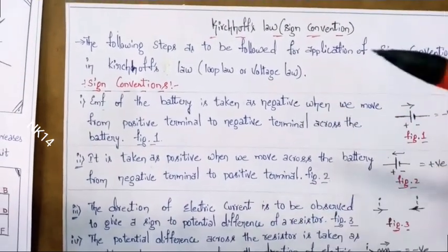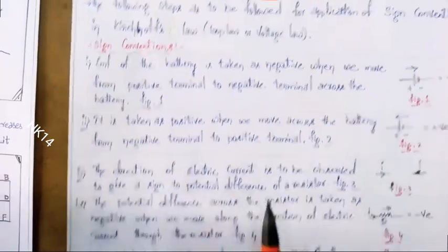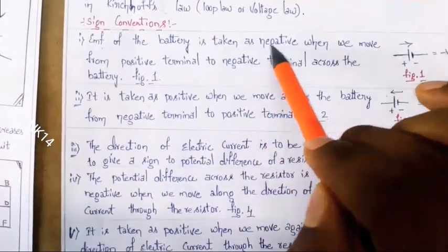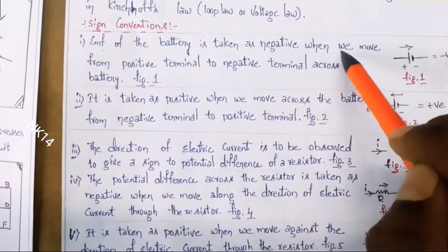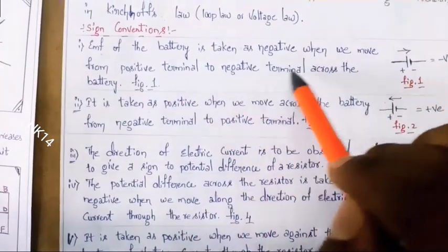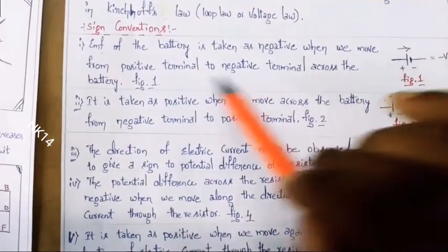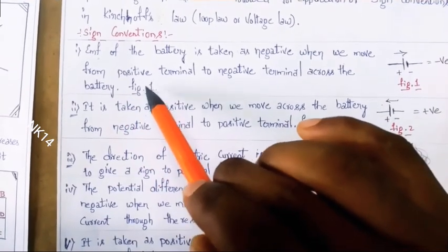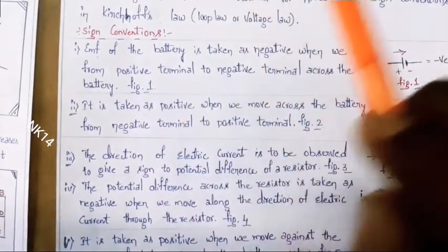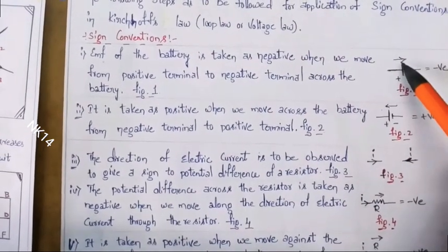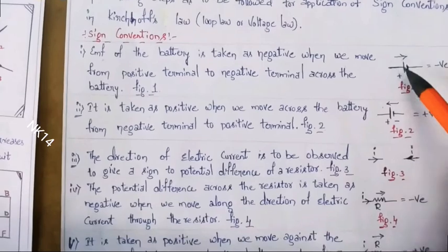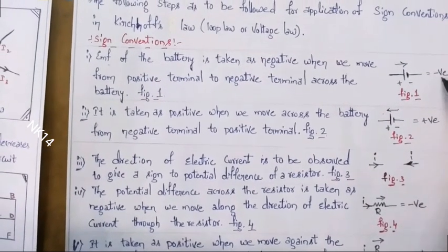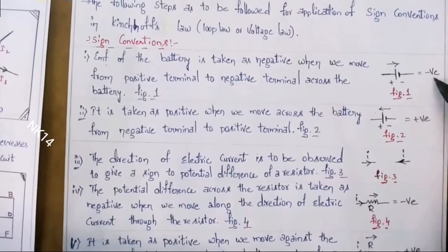The first point: EMF of the battery is taken as negative when we move from positive terminal to negative terminal across the battery. Figure 1 explains this neatly. If the EMF is transferring from positive to negative, then we will take it as negative voltage.